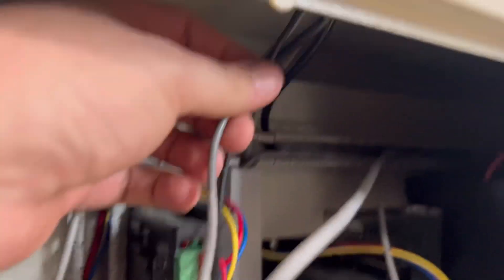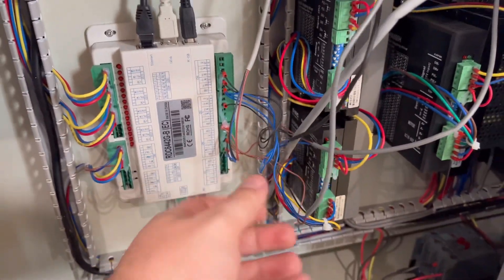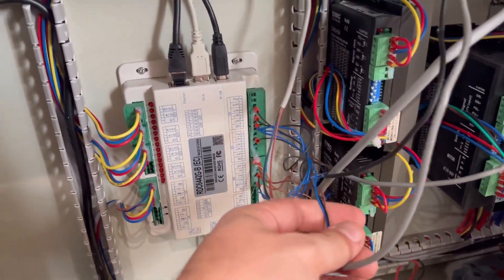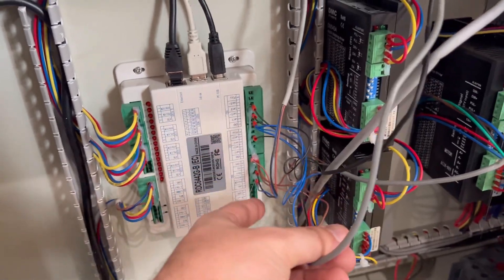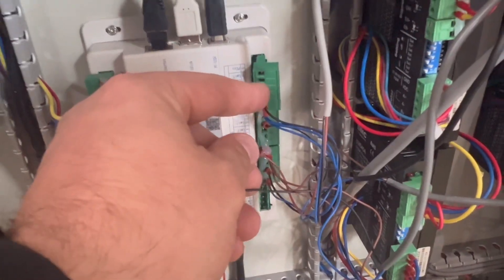You're going to want to follow the proximity sensor wire down. Ironically, the air compressor and proximity sensor wires are the same color, so be careful. Then find the corresponding hub where the wire is connected.